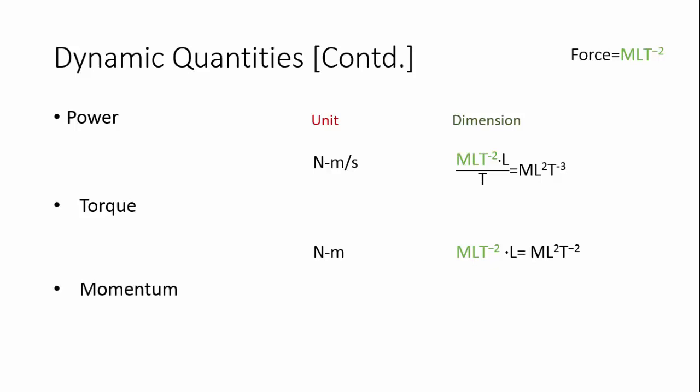Momentum is mass into velocity. It has a unit of kg into meter per second, so kg has a fundamental dimension of M and meter per second has a dimension of L·T to the power minus 1, giving M·L·T to the power minus 1. Thank you for watching. The next video will be on applying these fundamental dimensions in dimensional homogeneity.